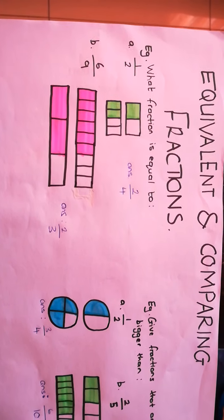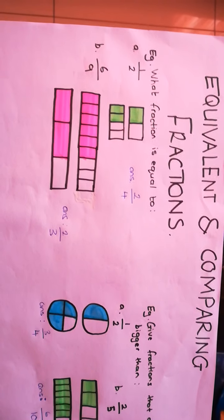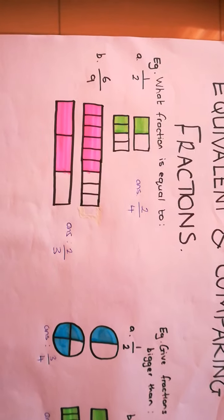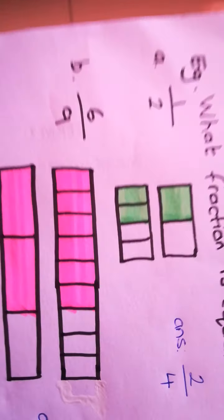Equivalent fractions are fractions that are equal to each other and comparing fractions we're just seeing which ones are bigger, which ones are smaller. So let's look at our first example here.